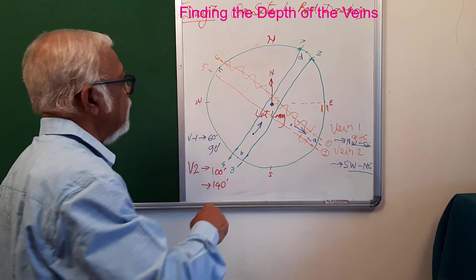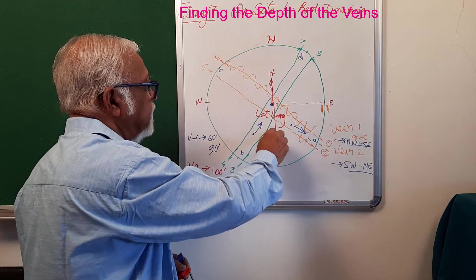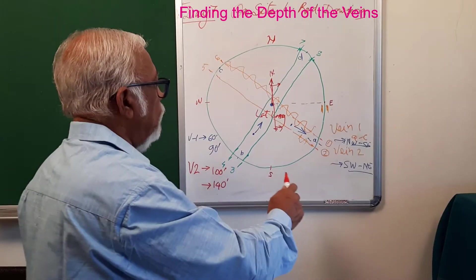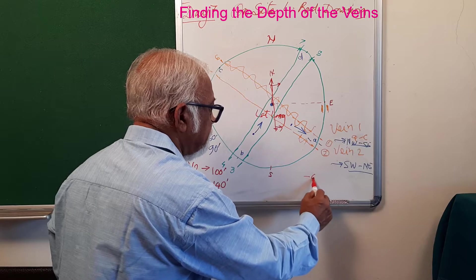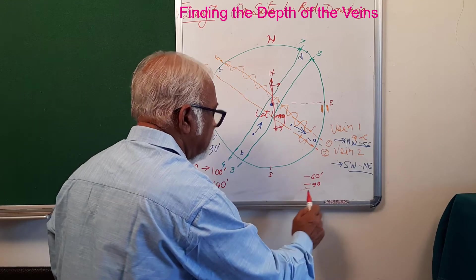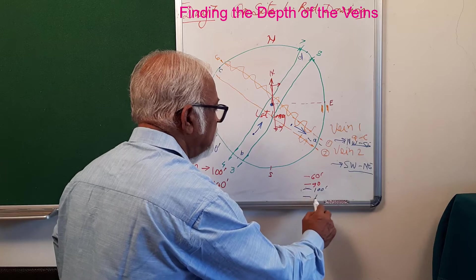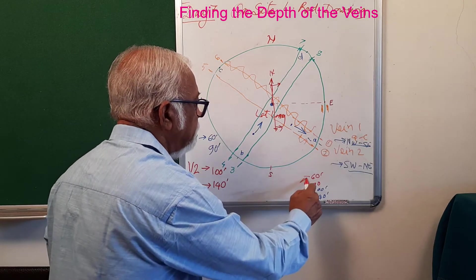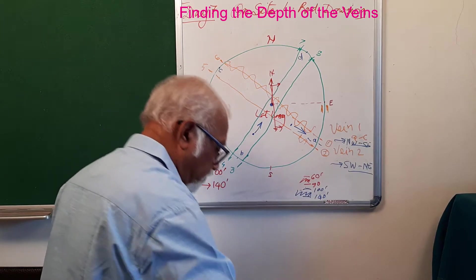If I take a cross section where the bore well is, I have two veins at different levels. So I have 60 feet porous material, 90 feet, then 100 feet, and the last one at 140 feet. In between this is water.